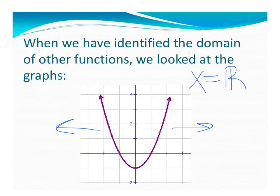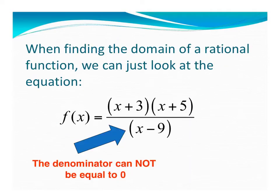For rational functions, we are going to have all real numbers, but we're going to exclude some values as well. When we want to find the domain, we basically just look at our denominator. Domain, denominator - they go together.